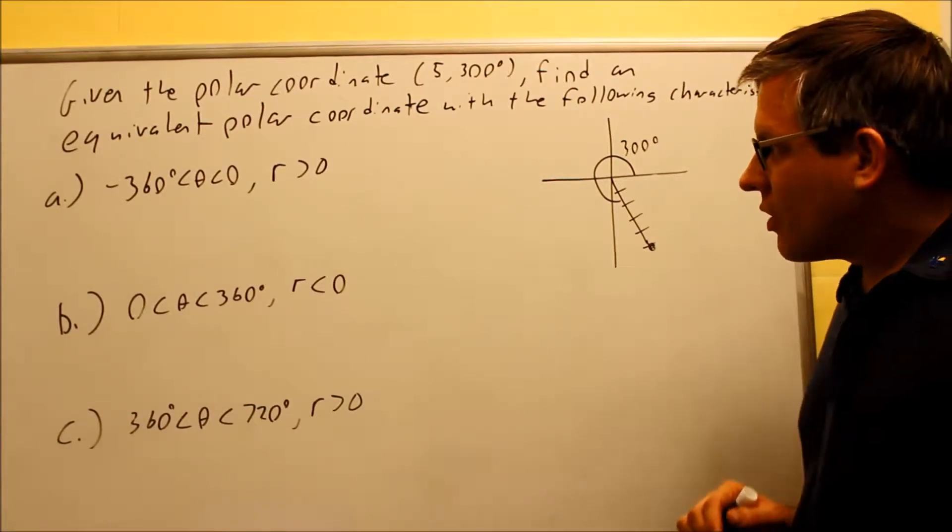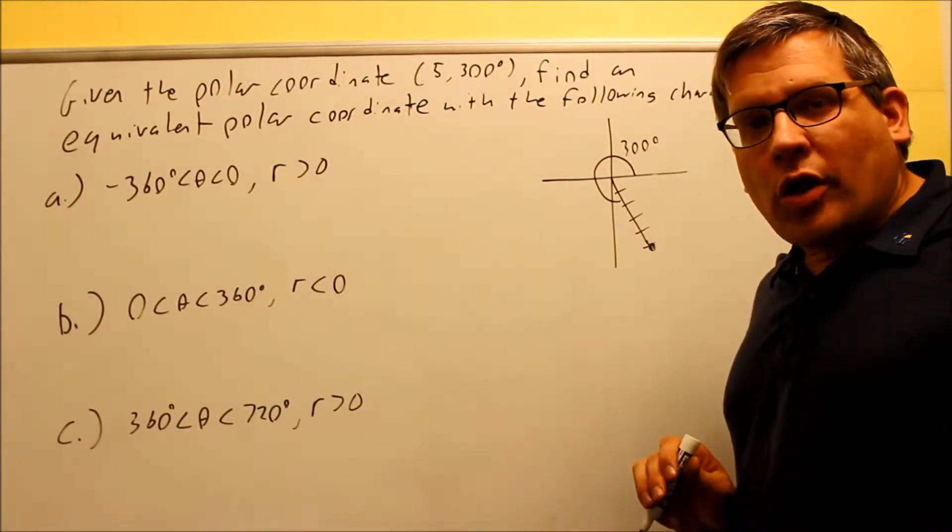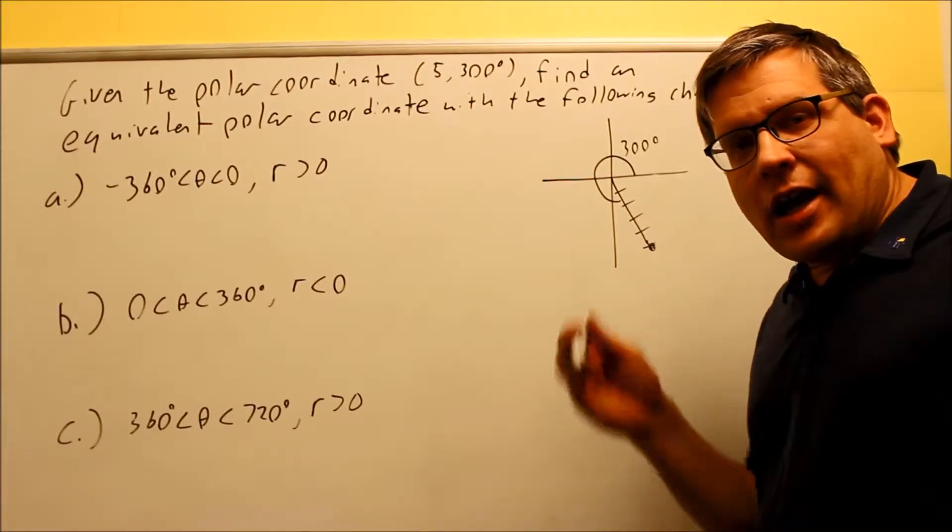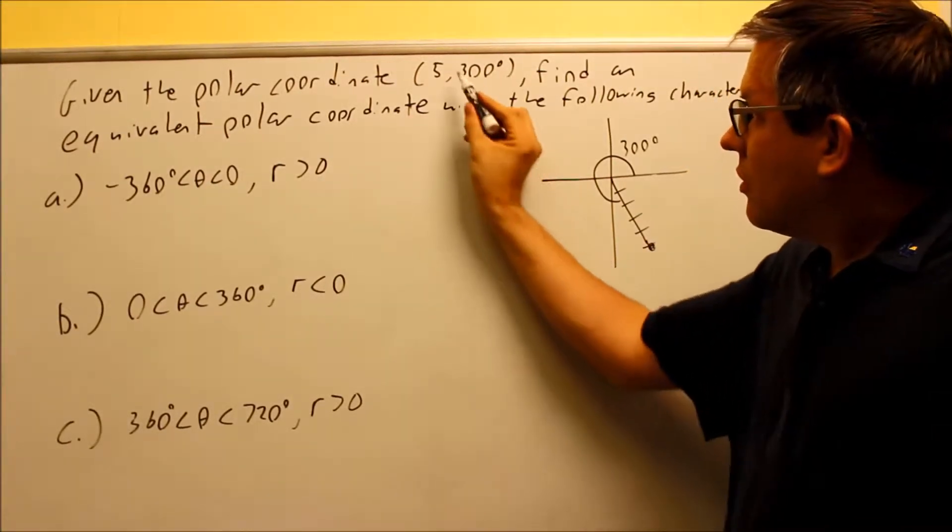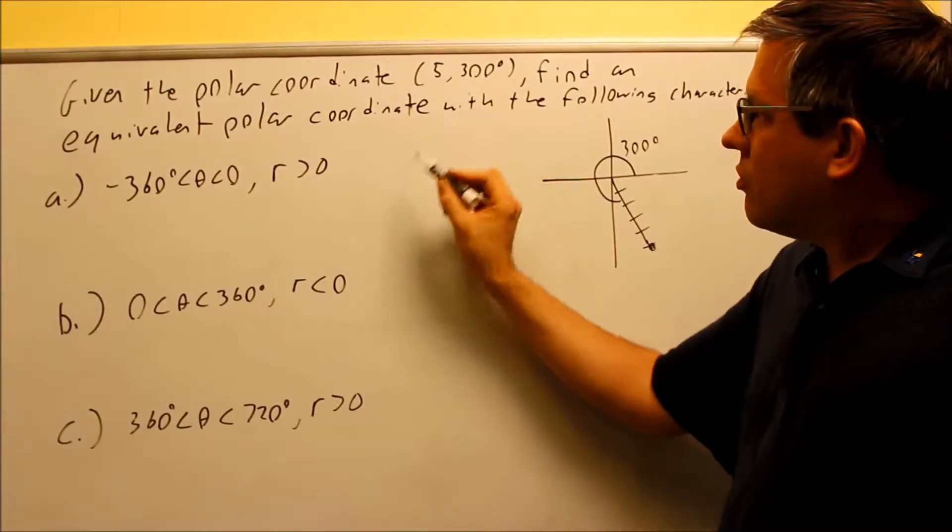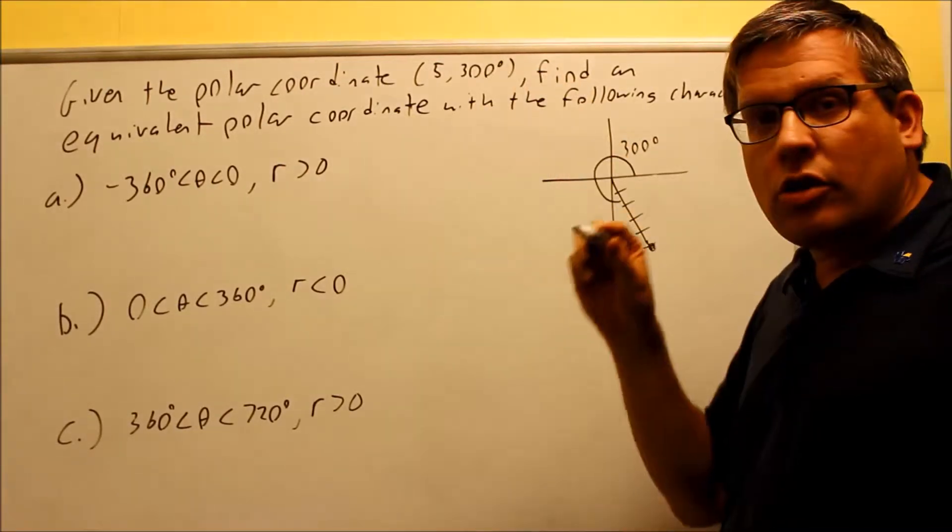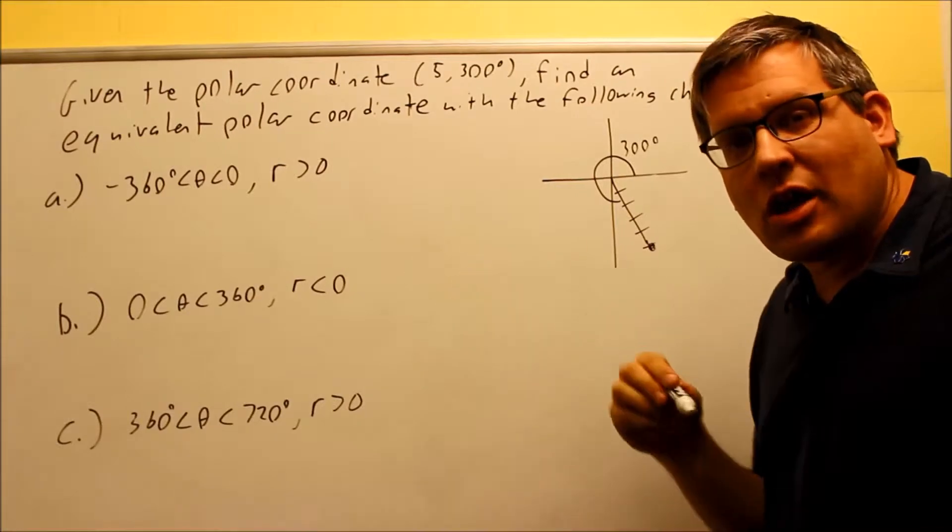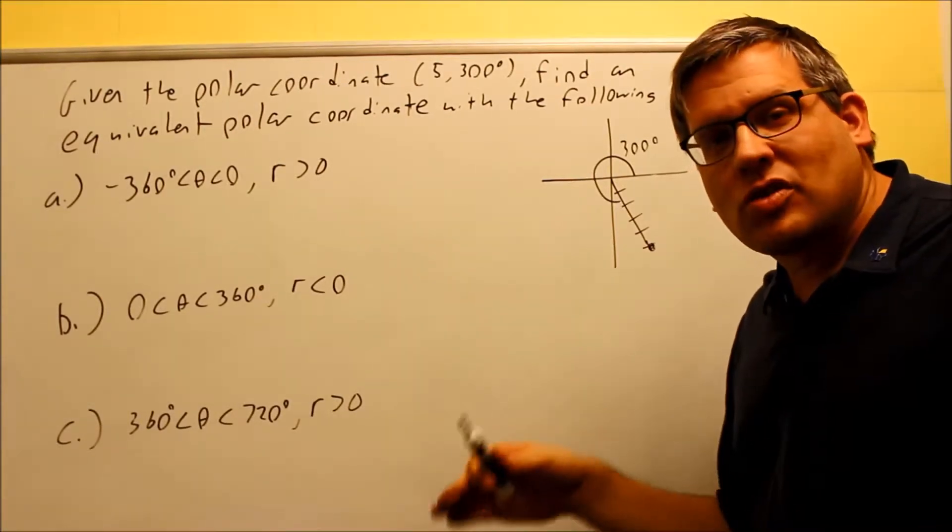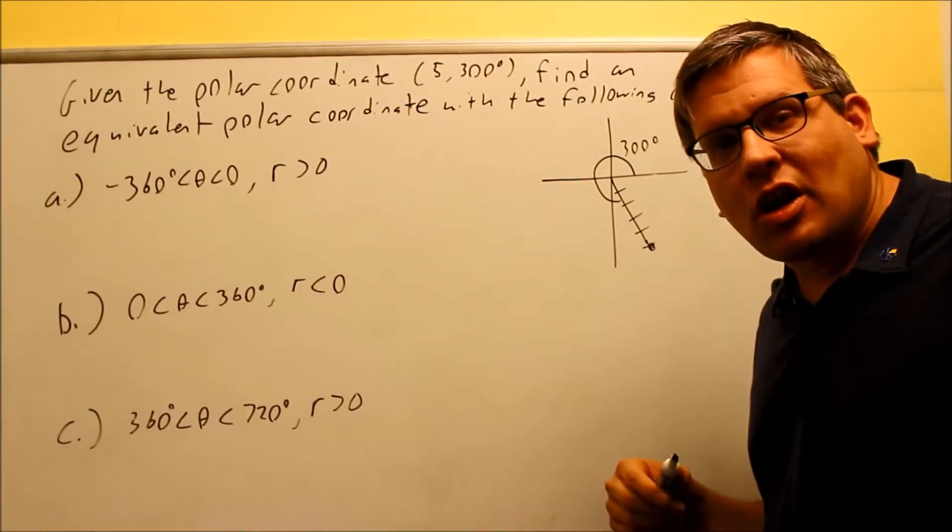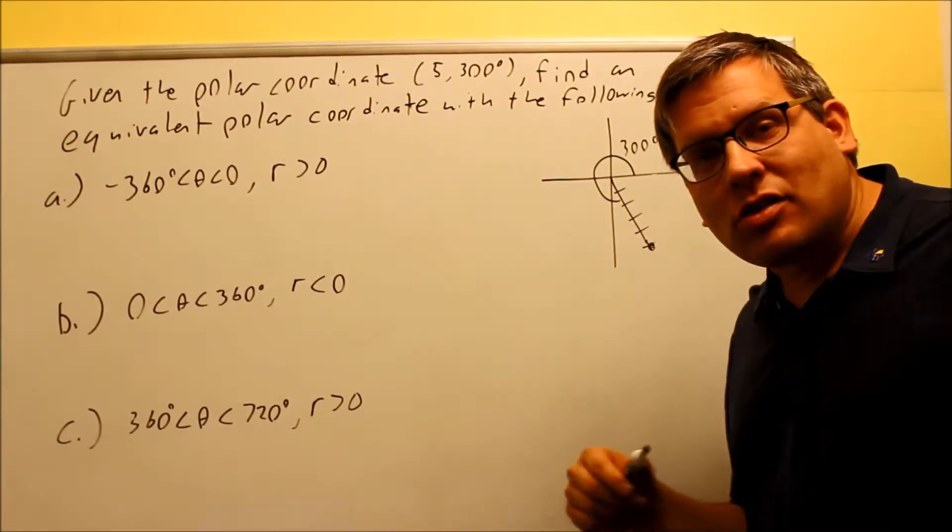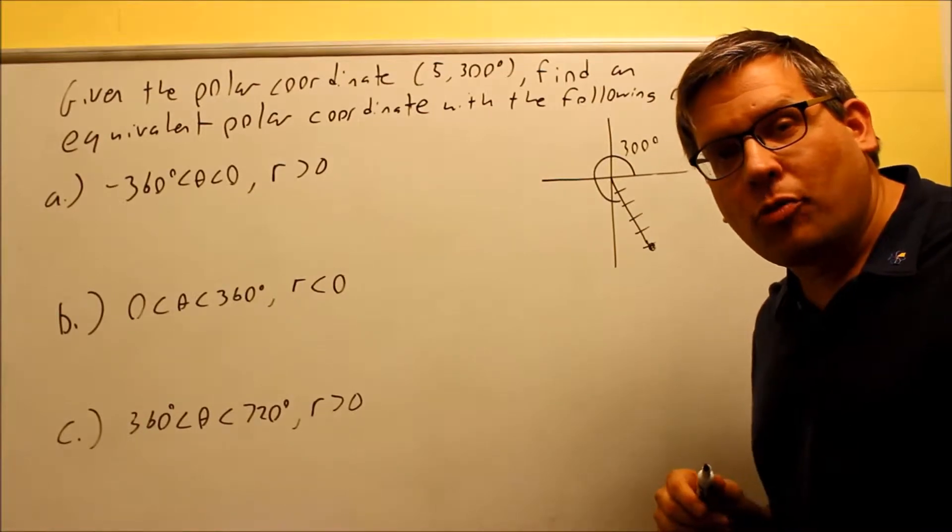The first one, okay. It says my r needs to be greater than 0. Now those formulas I had in the previous video show that if you're not changing the sign of the r, you're going to work with 360. So anytime, if you're not changing the sign of the r, you're going to add or subtract 360. If you do want to change the sign of the r, you want to add or subtract 180. That's basically how the formulas work.